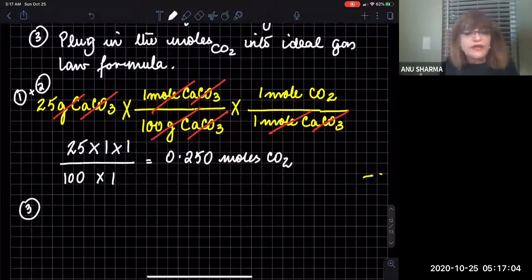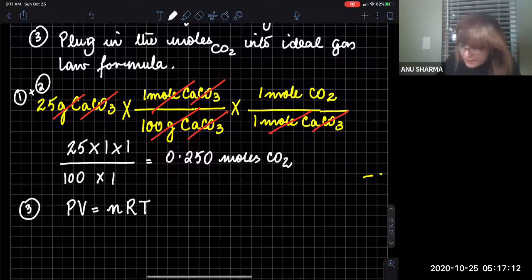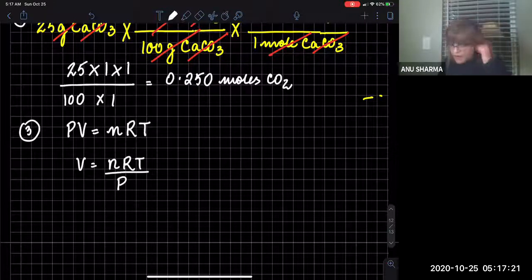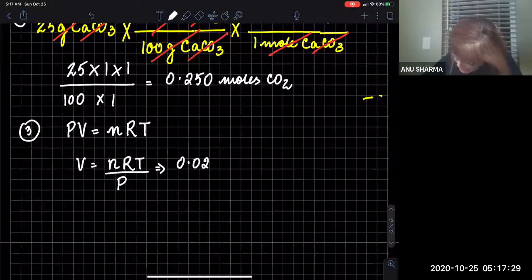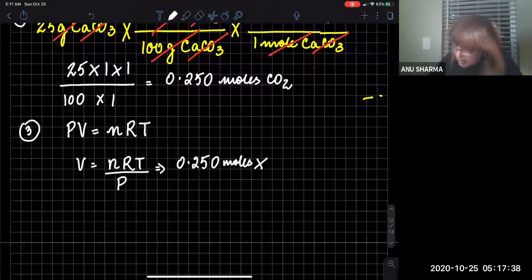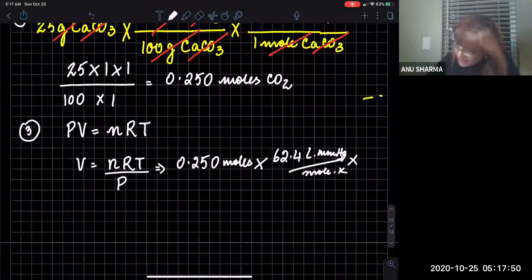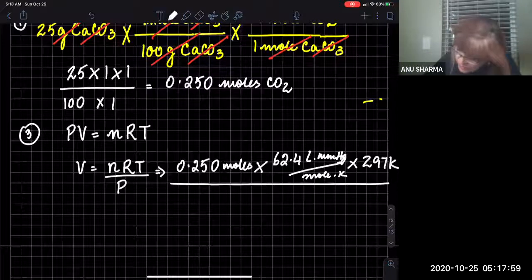Step three: take the moles of carbon dioxide and plug them into the formula. PV = nRT, and since we are finding volume, V = nRT/P. Plugging in: n = 0.250 moles, R = 62.4 L·mmHg/mol·K, T = 297 K (already converted to Kelvin), and P = 752 mmHg.